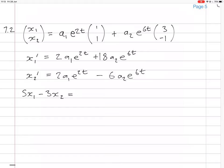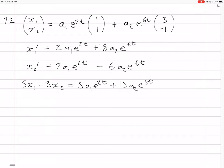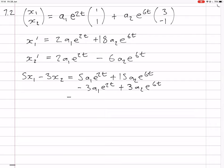We have 5a1 e to the 2t, plus now we have 3 times 5, which is 15a2 e to the 6t. And now we are subtracting 3 times x2. Second line, so 3a1 e to the 2t, or minus 3a1 e to the 2t, and then minus 3a2 e to the 6t, but there's a minus 1 there, so that comes plus. And so that all comes out to, that's indeed x1 dash. We have x1 dash, so the solution, that part of the solution is correct.